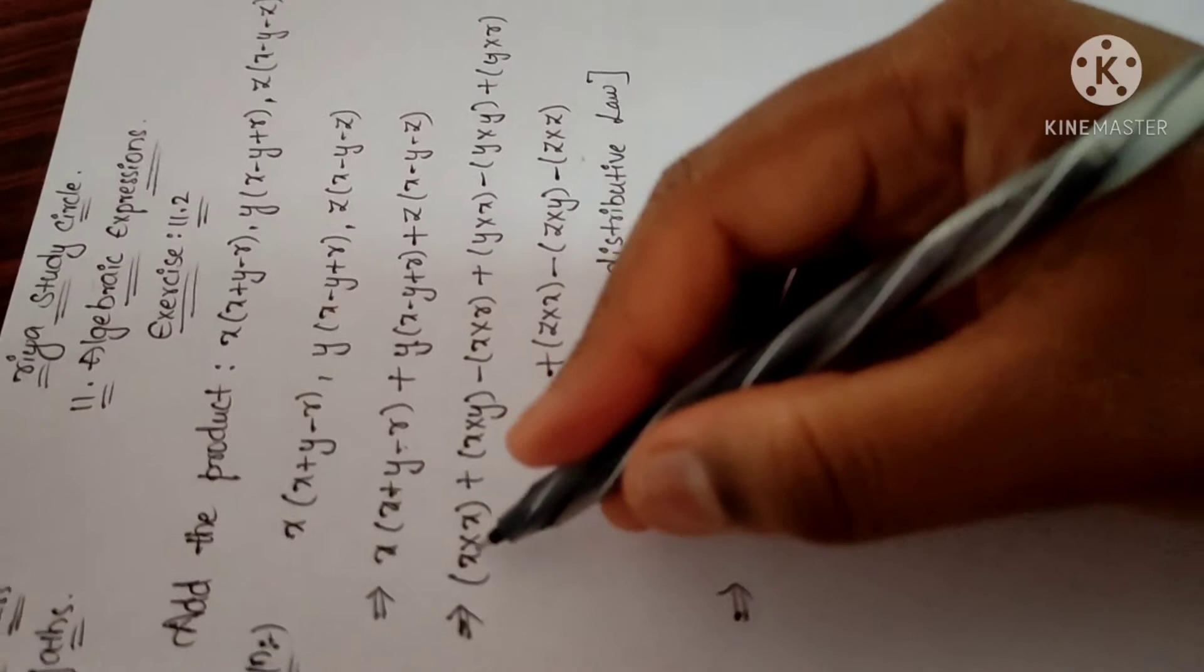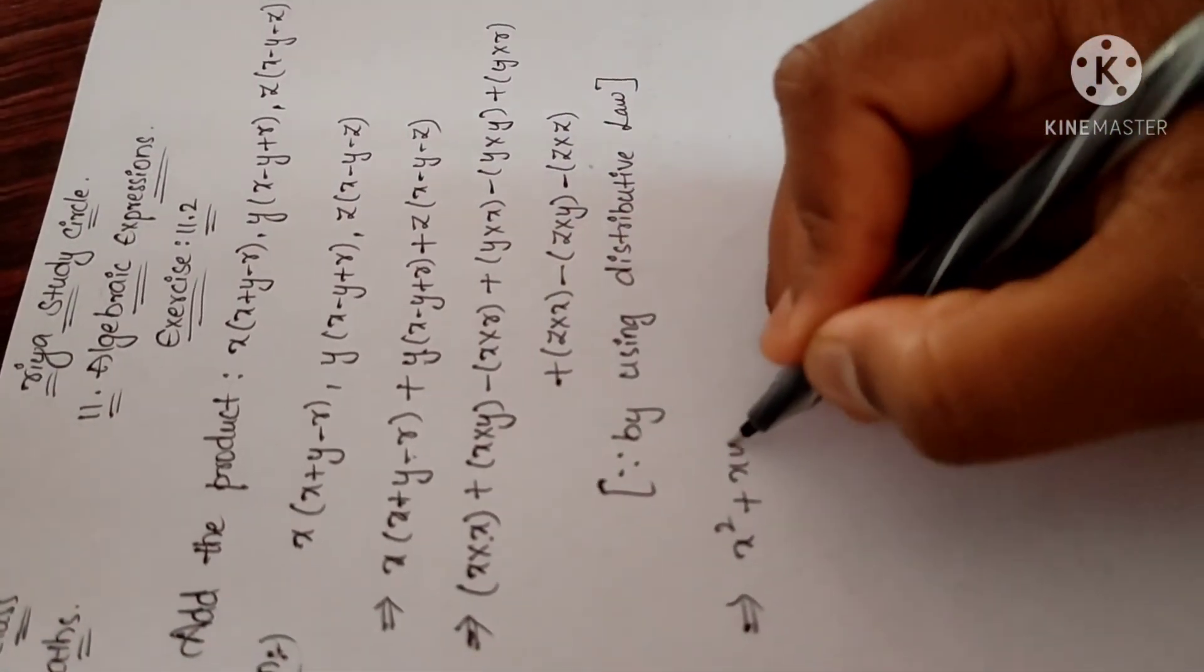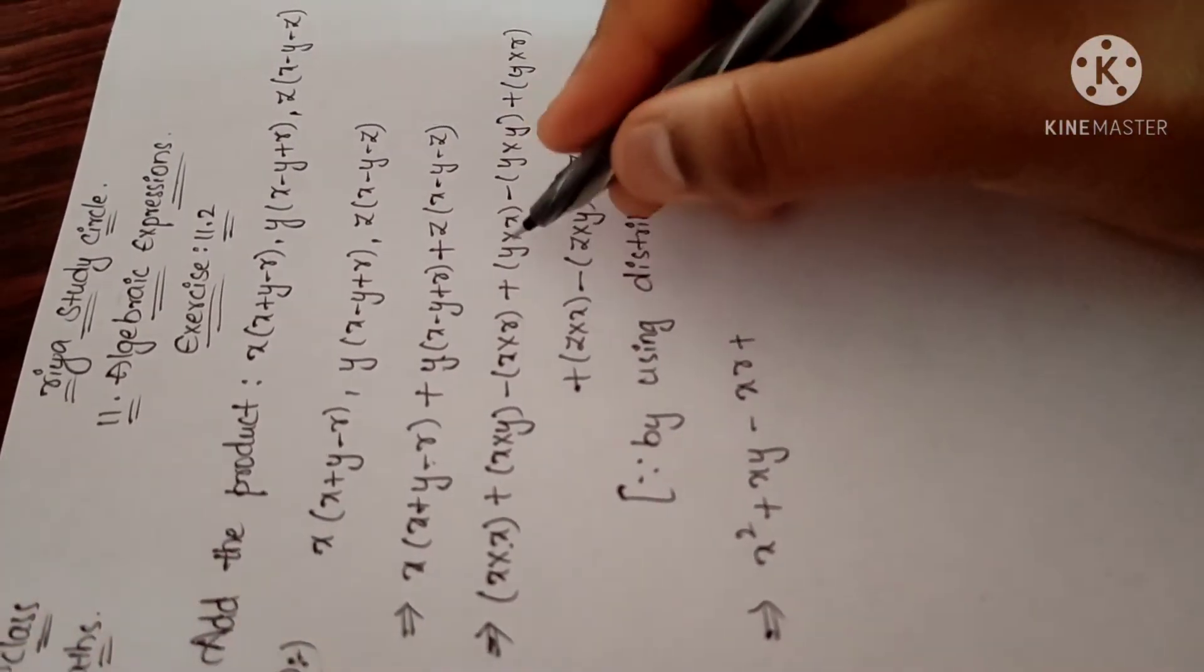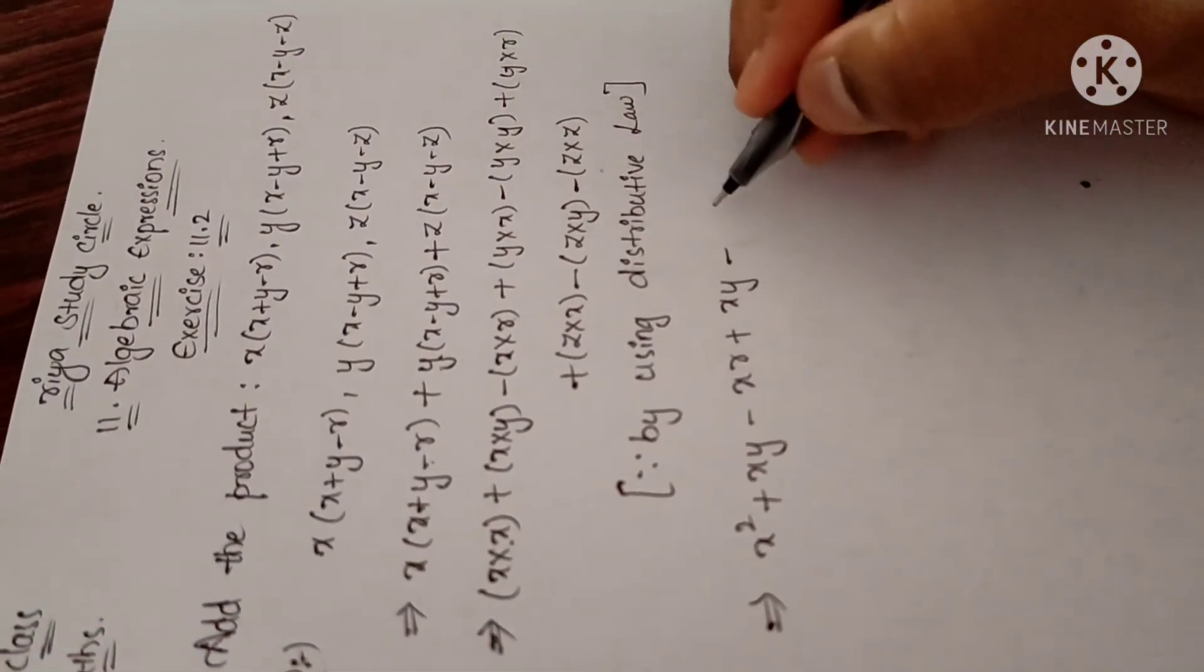We get x into x is x squared, plus x into y is xy, minus x into r is xr, plus y into x is xy, minus y into y is y squared.